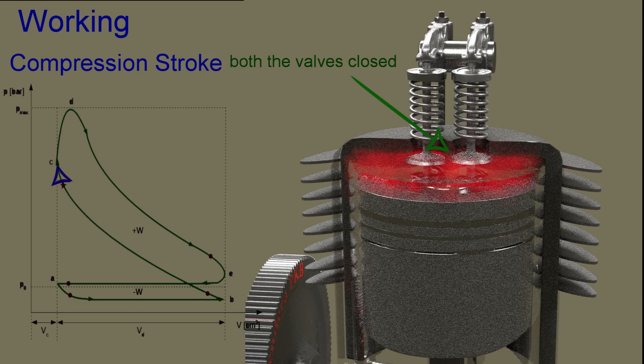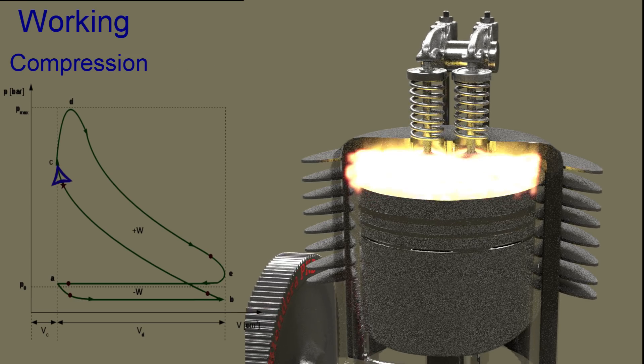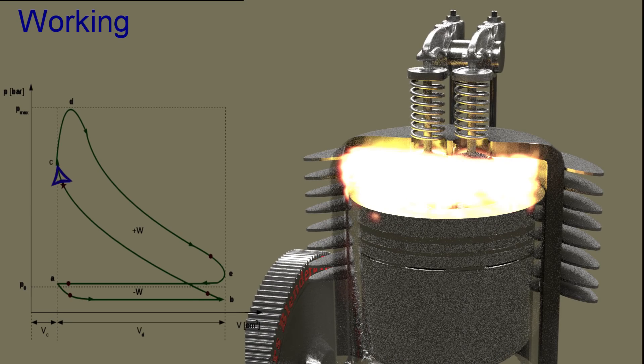Very shortly when the piston reaches top dead center during the compression stroke, the air-fuel mixture is ignited by spark plug. Unlike the diesel engine, the combustion process in spark ignition engine is for a very short period of time and therefore the piston has very small movement during combustion. Therefore, the volume of combustion chamber practically remains constant and thus heat addition process can be approximated as a constant volume process in petrol engine.